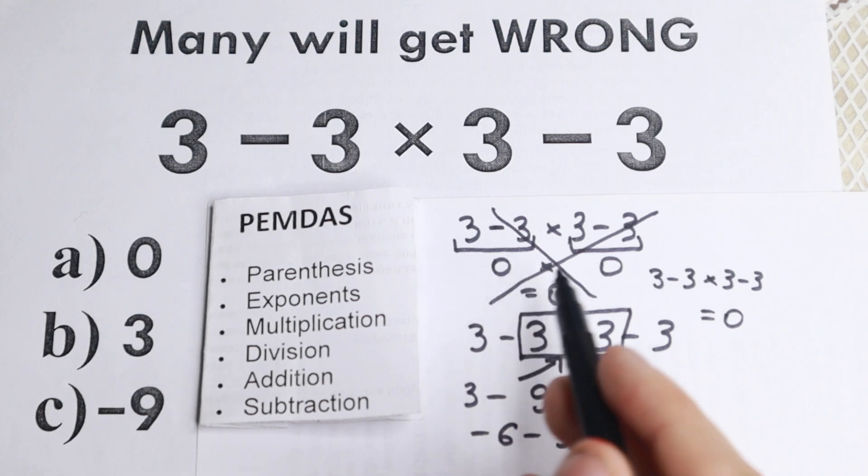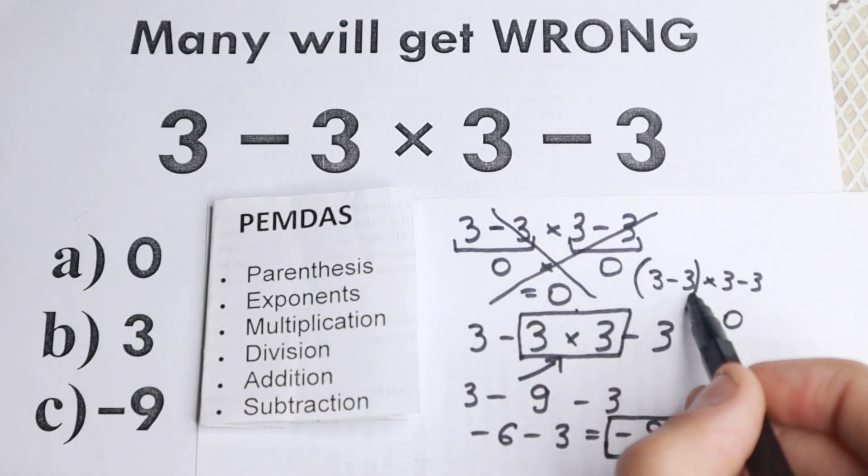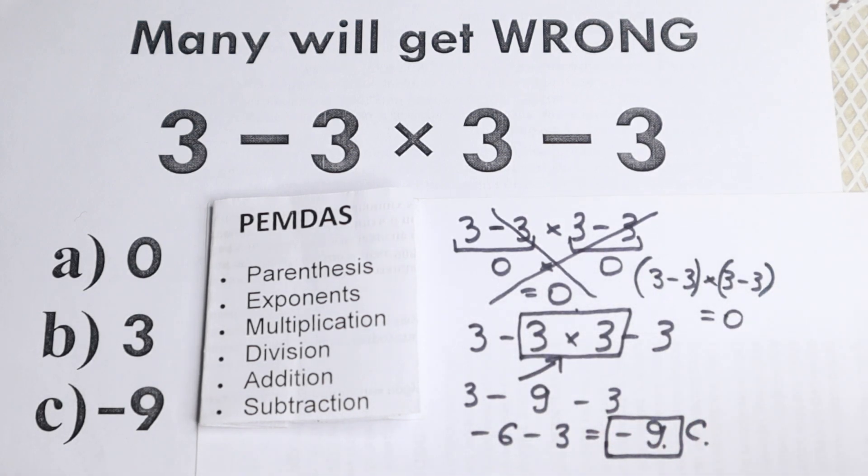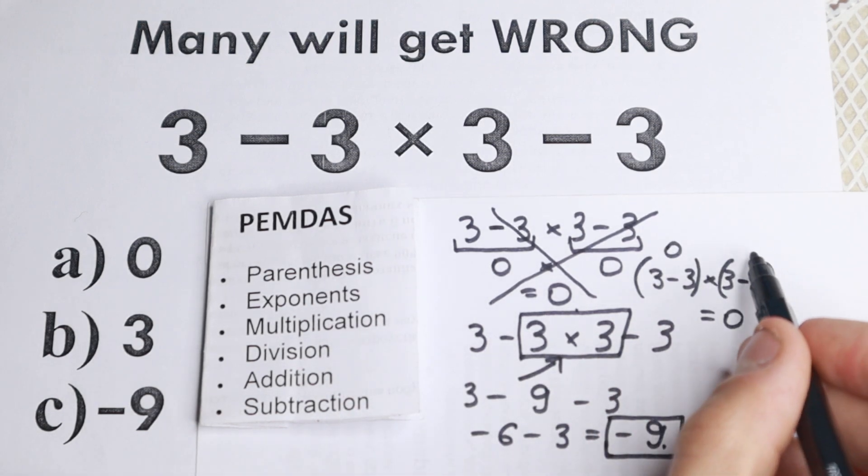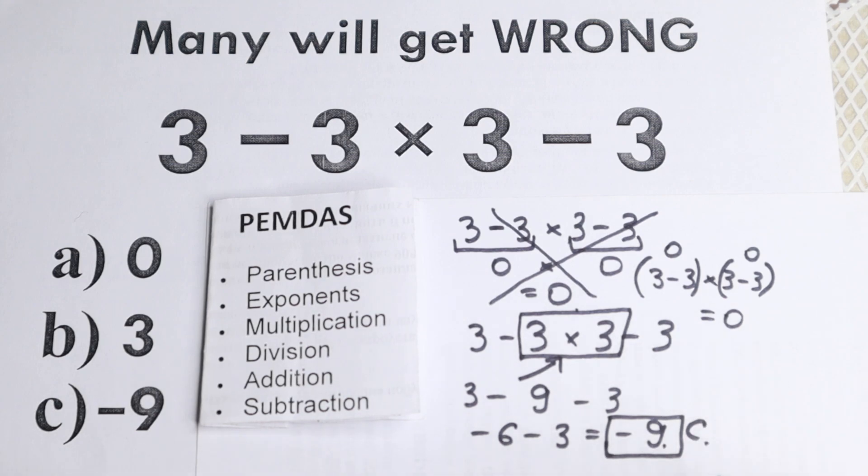And then, this is really great, because you need to start with parentheses. Right here zero, right here zero. And you have your answer zero. But right here we don't have parentheses. So the correct answer is minus 9.